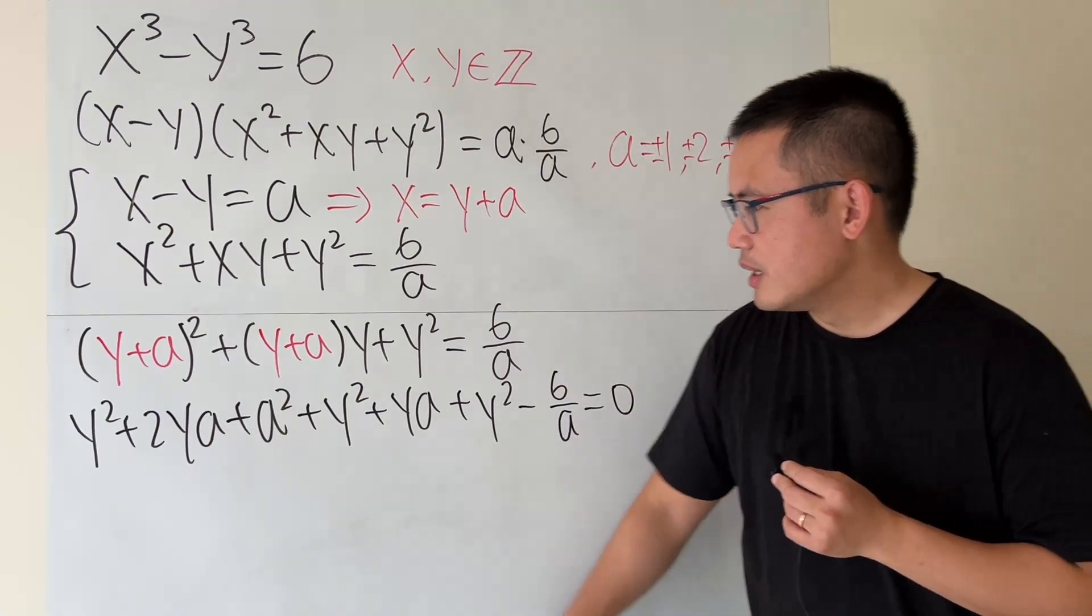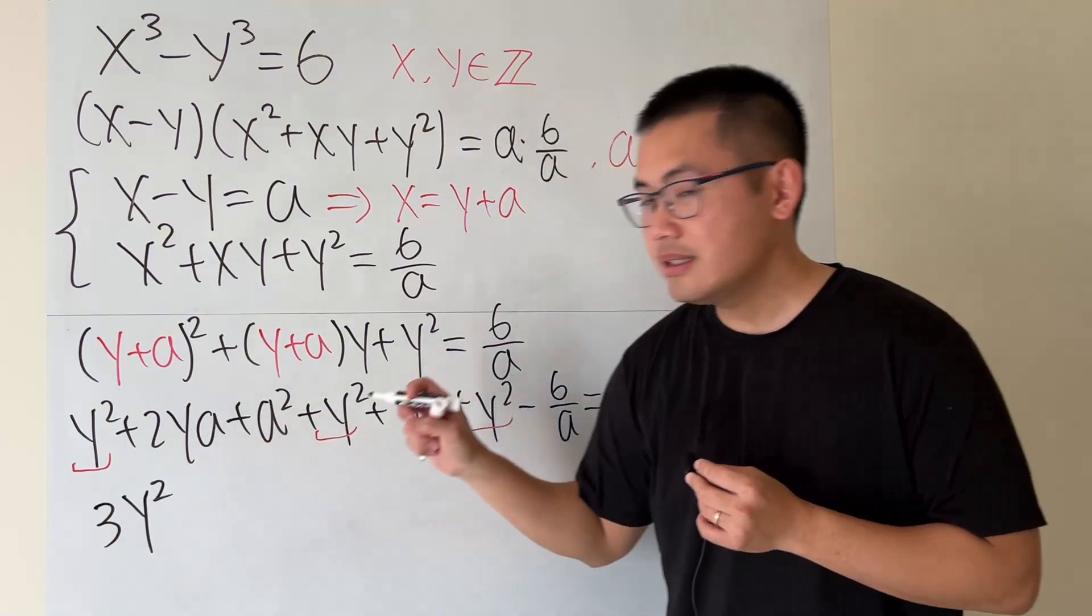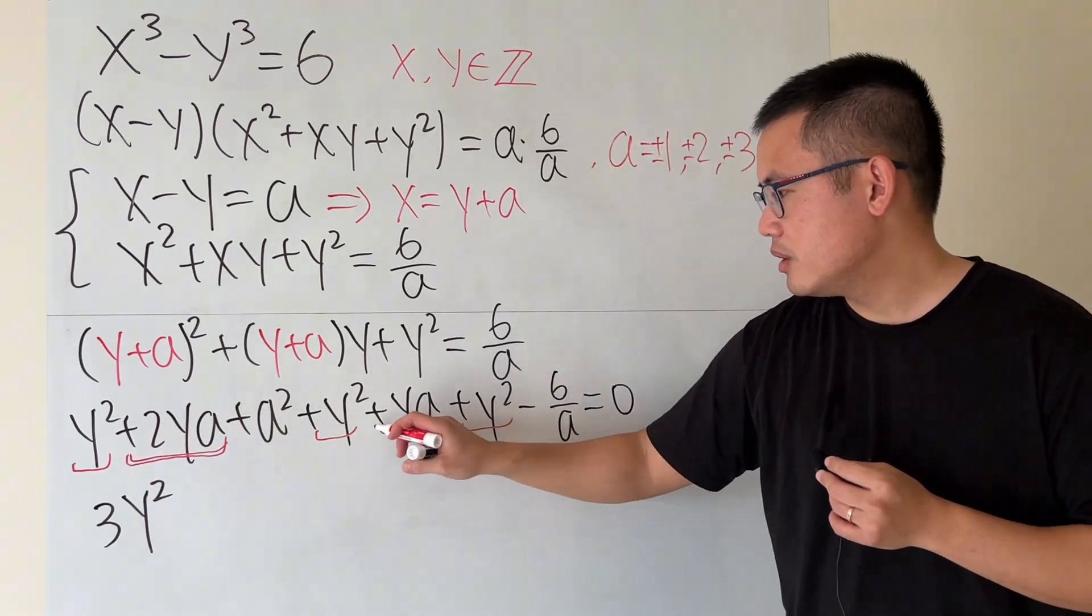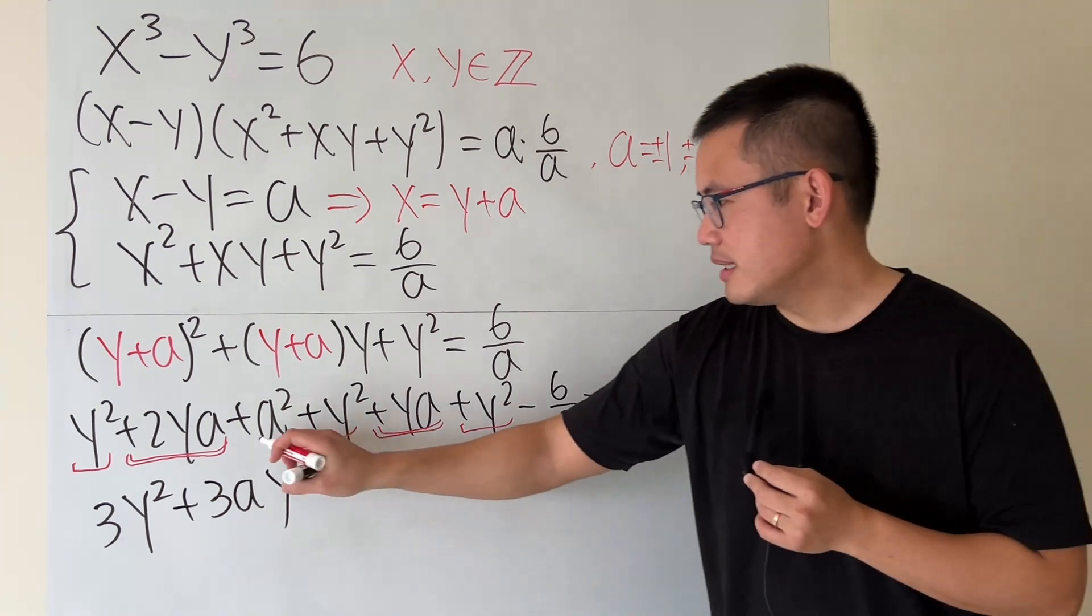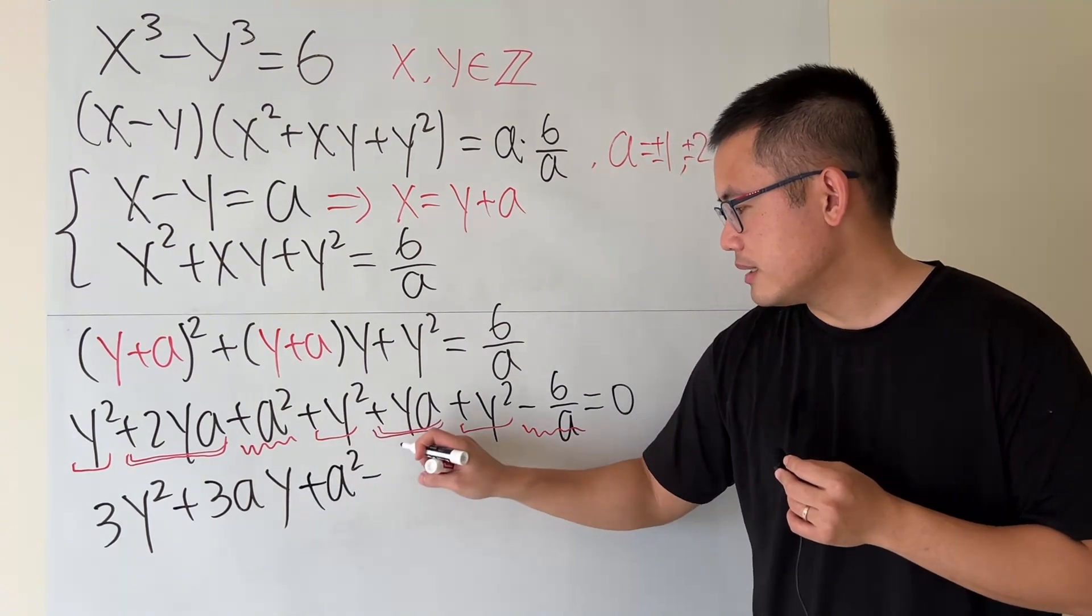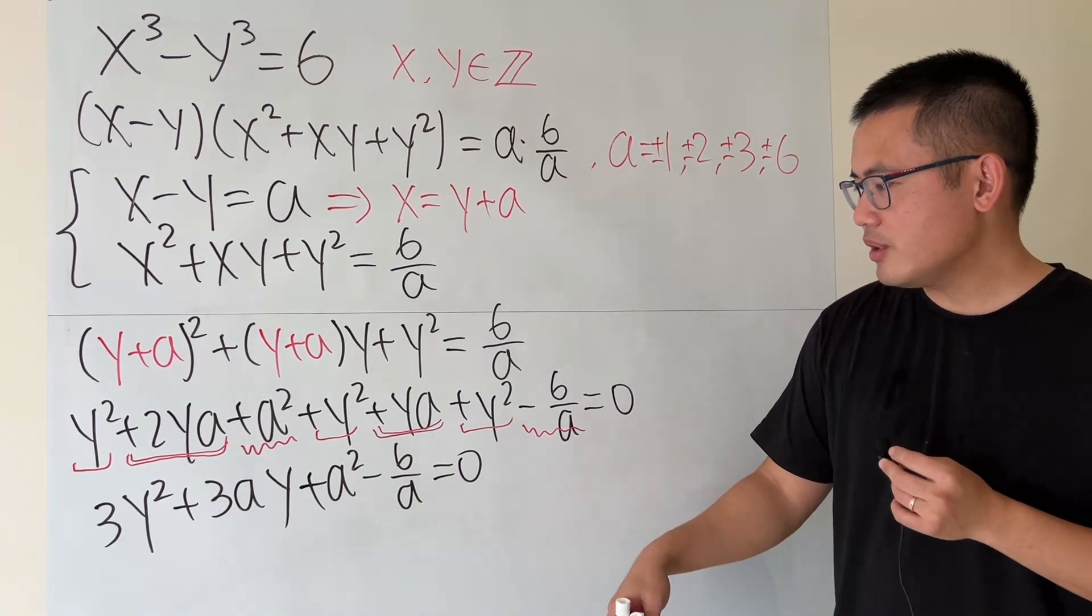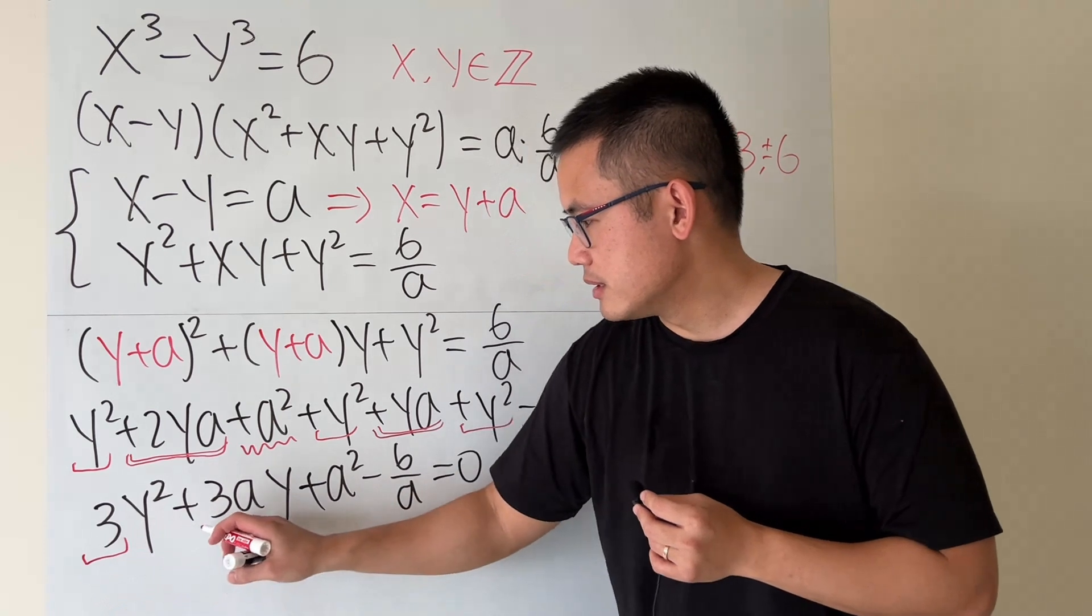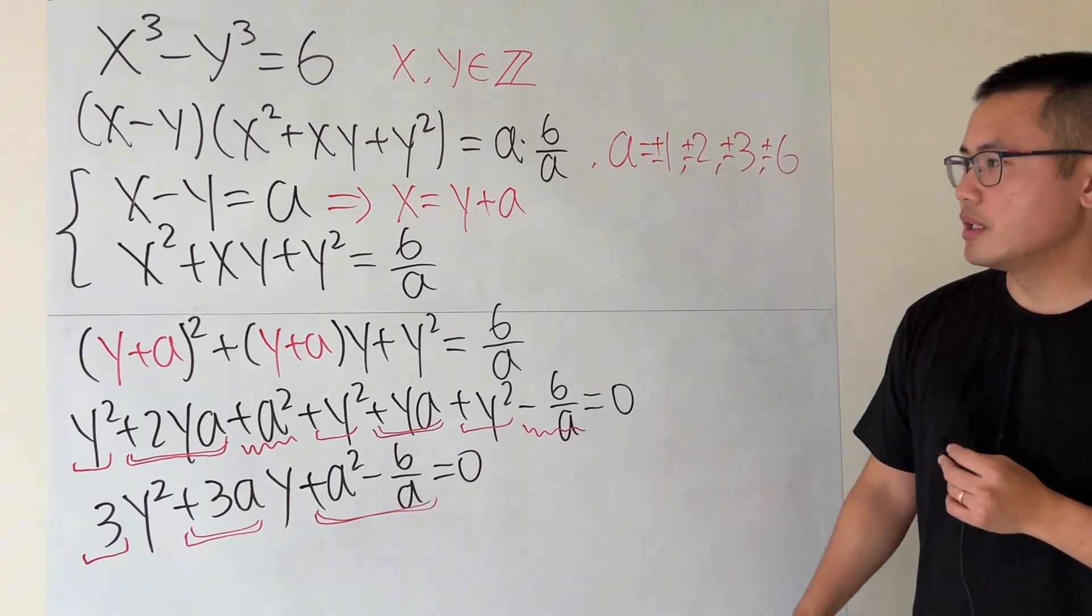So let's y squared plus 2ya. That's kind of cool. And then plus a squared, and then distribute this. That's the radius ya. And then we have plus y squared. And let's move this to the other side. So minus 6 over a is equal to 0. Now, let's take a look. We have y squared, another one, and then one more. So 3y squared. And then we have this is 2ya, and then 2ya. So three of them. So plus, let me write it as 3ay. And this and this, a squared minus 6a. So plus a squared minus 6 over a. And that's equal to 0. And if you don't like fractions, you can just multiply everybody by a. But this right here, it's a quadratic equation already in terms of y. So this is the first coefficient, and then next, and then the constant term.